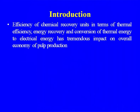Efficiency of the chemical recovery in terms of thermal efficiency and energy recovery — conversion of thermal energy to electrical energy — has tremendous impact on the overall economy of the pulping. In pulping, a huge amount of steam is used, and most paper mills have co-generation: they have a thermal power plant and also a recovery furnace from where they are generating steam. That steam is utilized in the process or it can fire boilers, and the boiler steam can go for generation of electrical energy.